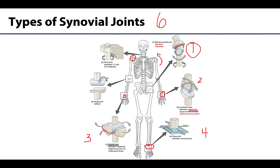Hinge joints are some of the more intuitive joints and are relatively simple in terms of actions allowed — this will allow flexion and extension. Movement is really only occurring in one plane, so these can be called uniaxial. The elbow joint is a great example of a hinge joint. The knee joint is actually a modified hinge joint.